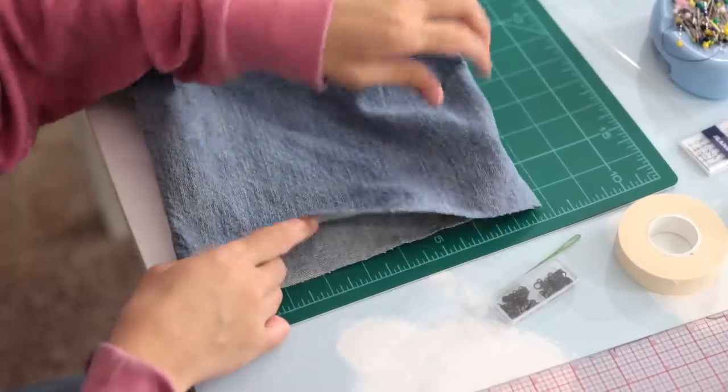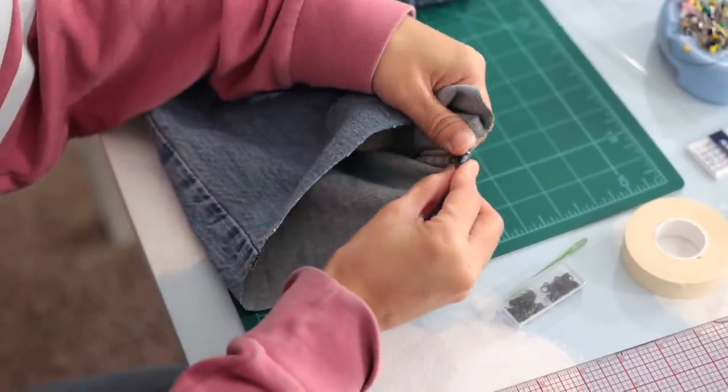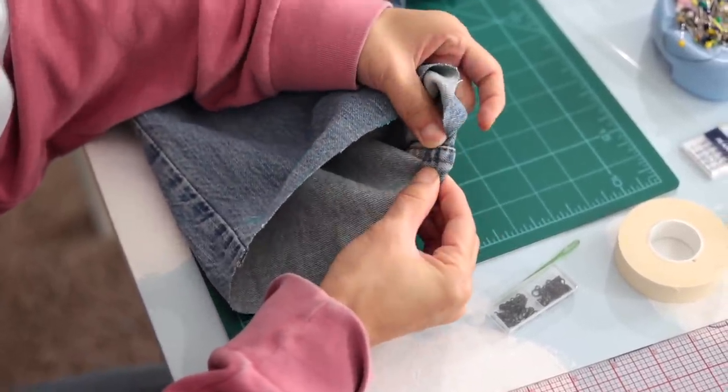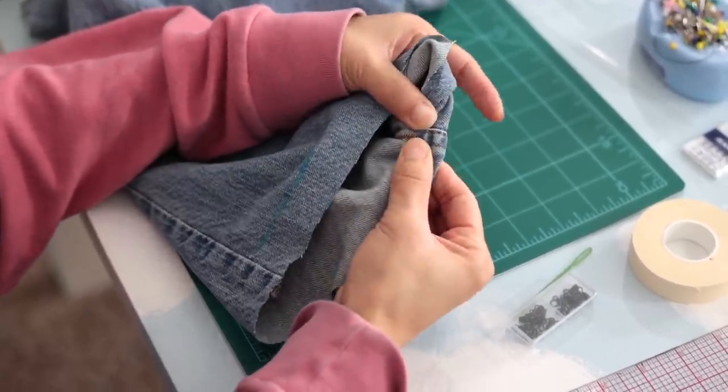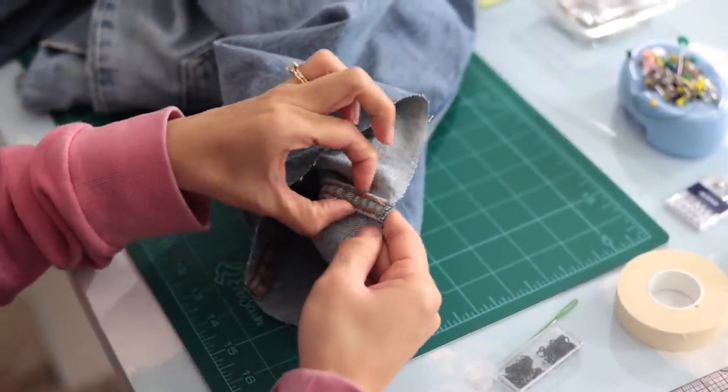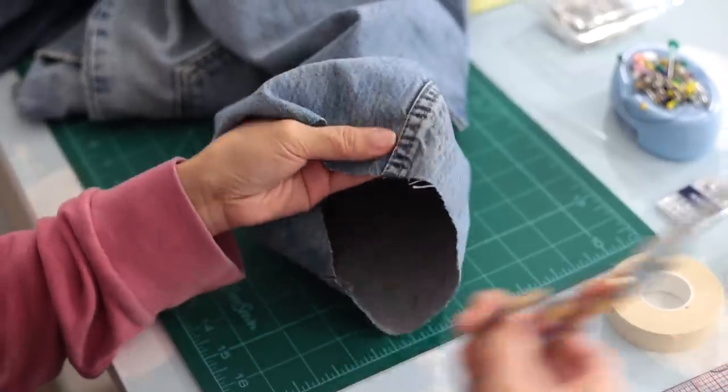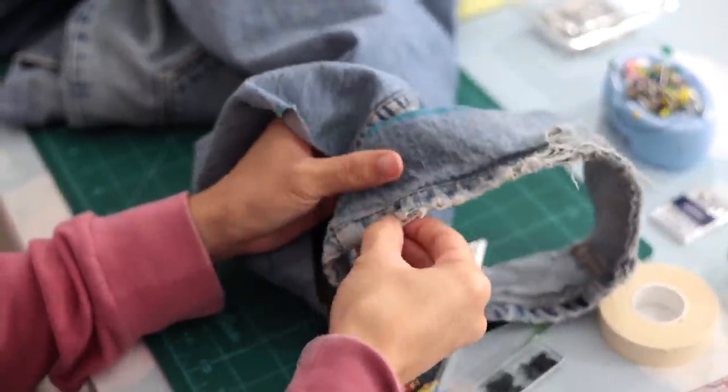When hemming jeans, you'll notice that when you get to these side seams right here, it's super bulky and difficult to sew over. Some of you probably have even broken a needle trying to sew over this. Method number one is to cut the bulkiness right here away, and I'm only going to cut it the size of my hem, which is 5/8.